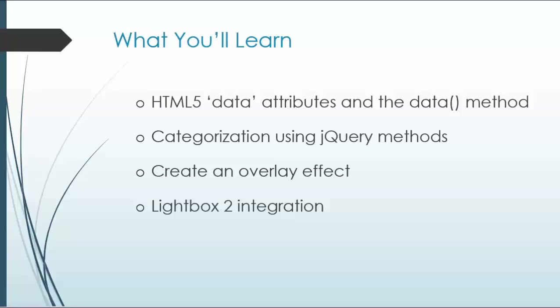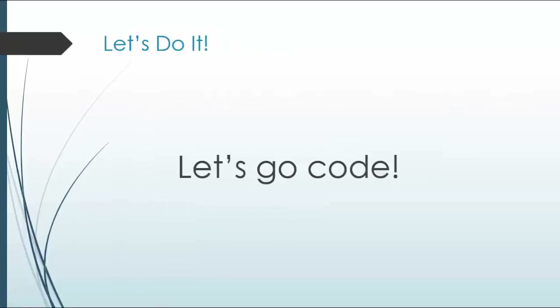We'll learn about HTML5 data attributes, which are really important if you want to attach data to elements, and we'll also look at the data method very briefly. Categorization using jQuery methods will create an overlay effect, and we're also going to implement the lightbox script to open images in their full size. So that's what we're going to be doing — I'll see you in the next video.